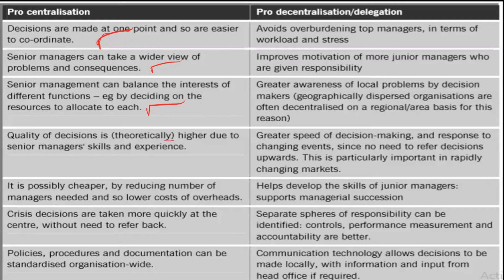The quality of decisions is theoretically higher because of the skills and experience of management. It is possibly cheaper by reducing the number of managers required, and so requires lower overhead costs, because everything is being decided at one level and there is not a large requirement for more managers.